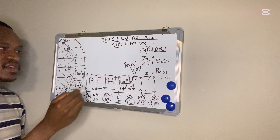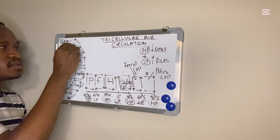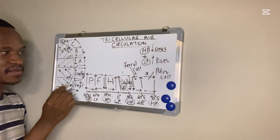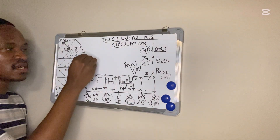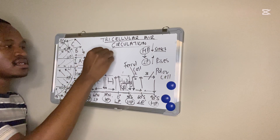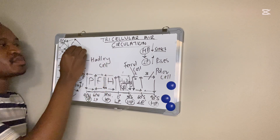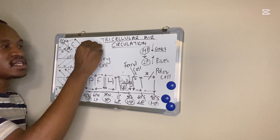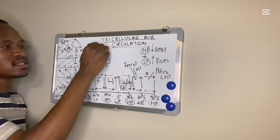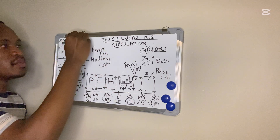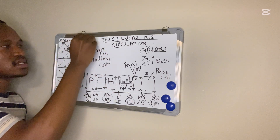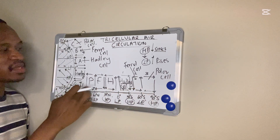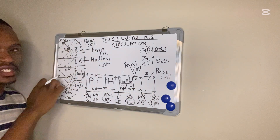The same labeling applies on the straight-line diagram: A is the Hadley cell, B is the Ferrel cell, and C is the polar cell. What I have on the straight-line diagram is the same thing that I have on the spherical diagram.